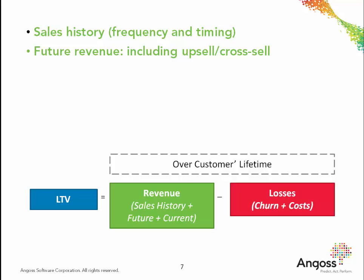On the other hand, possible sources of losses that reduce the value of revenue are churn. Churn results in a reduction of revenue because the customer decided to defect before the natural end of their lifetime, possibly due to competitive offers, poor service, high pricing, or any other reason. The second element that reduces customer value is the costs involved in keeping the customer — including costs of acquisition, maintenance, promotion, service, and the cost of the product itself.